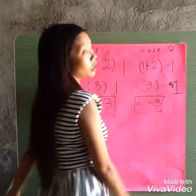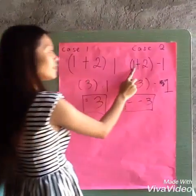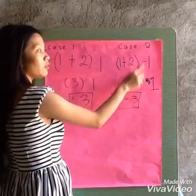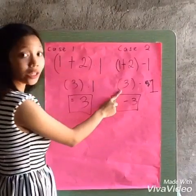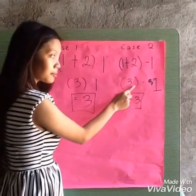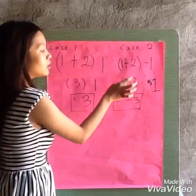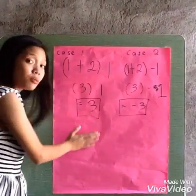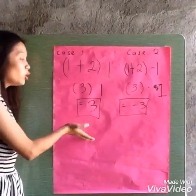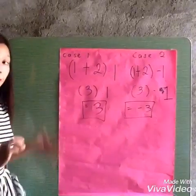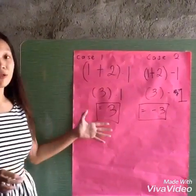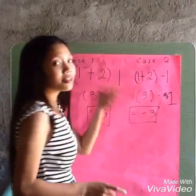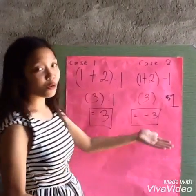For case number two with unfavorable noise: the receiver is one, the message is two, times negative one for the unfavorable noise. One plus two equals three, times negative one equals negative three. So in case number one, the favorable noise is positive three — it means there is feedback. In case number two, the unfavorable noise is negative three — it is negative because there is no feedback.